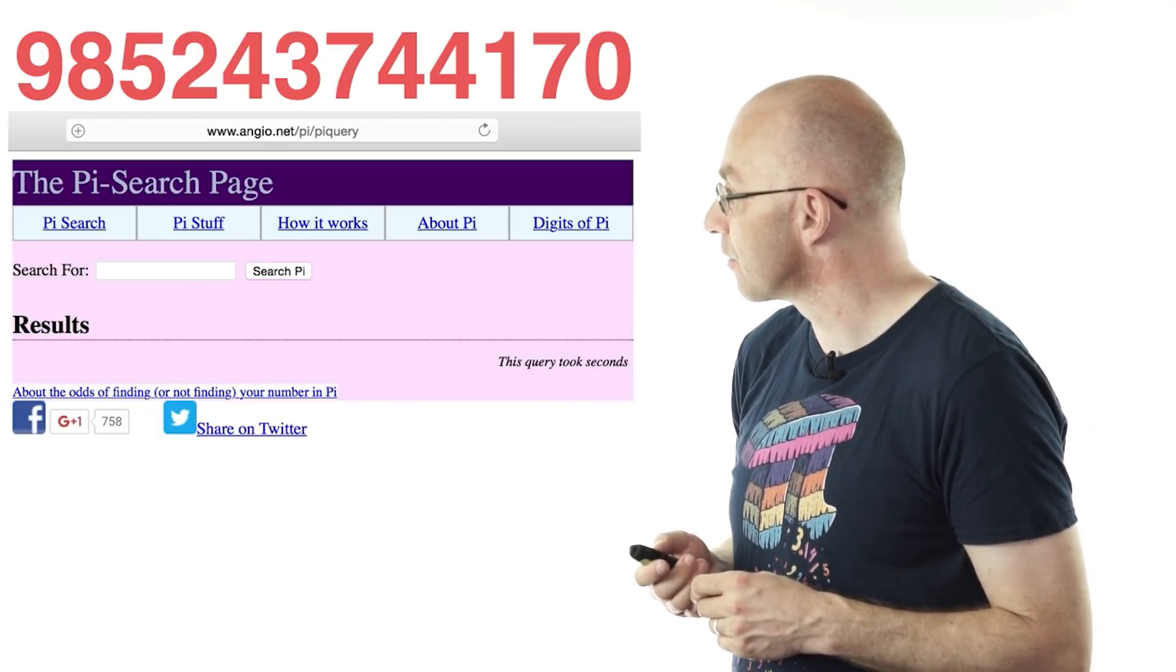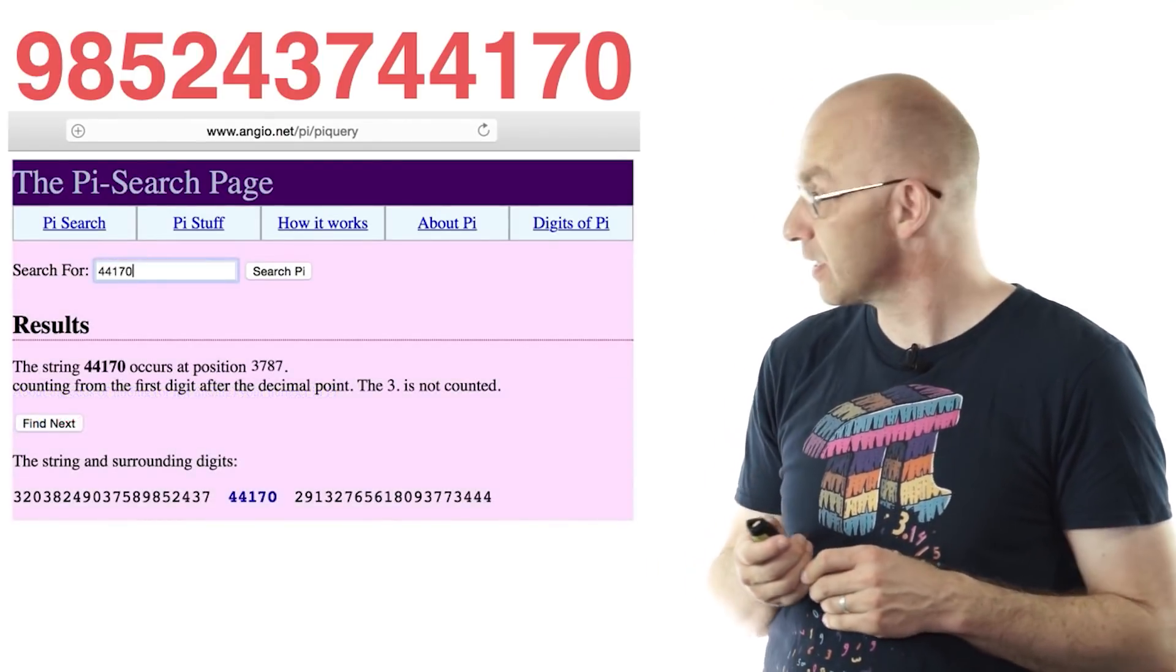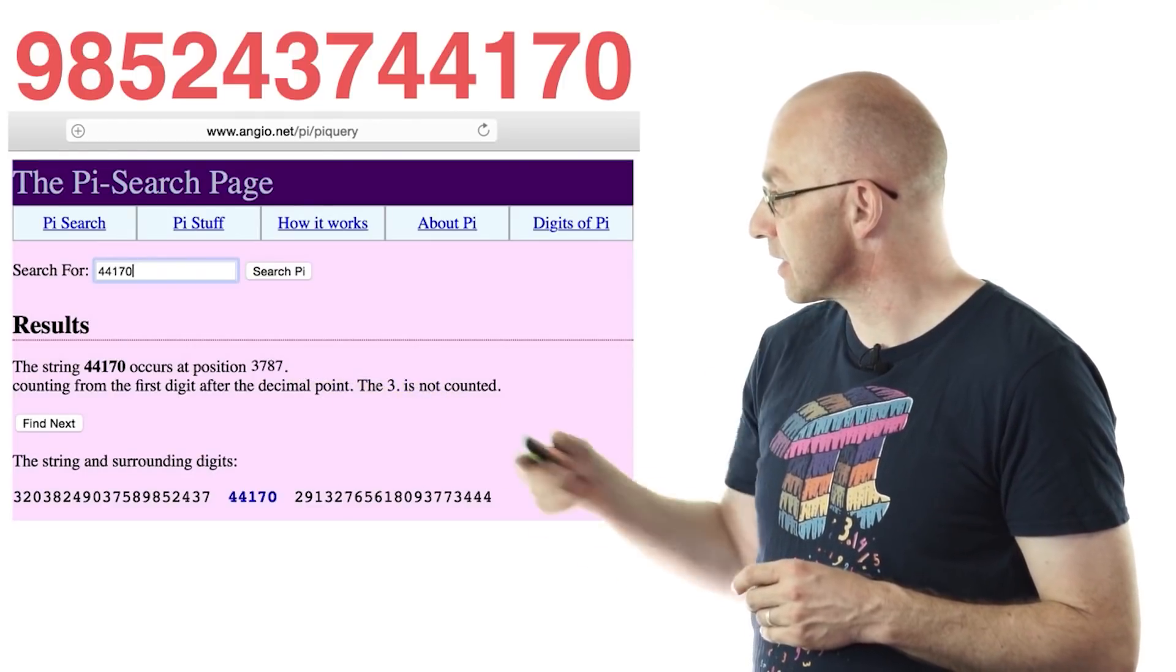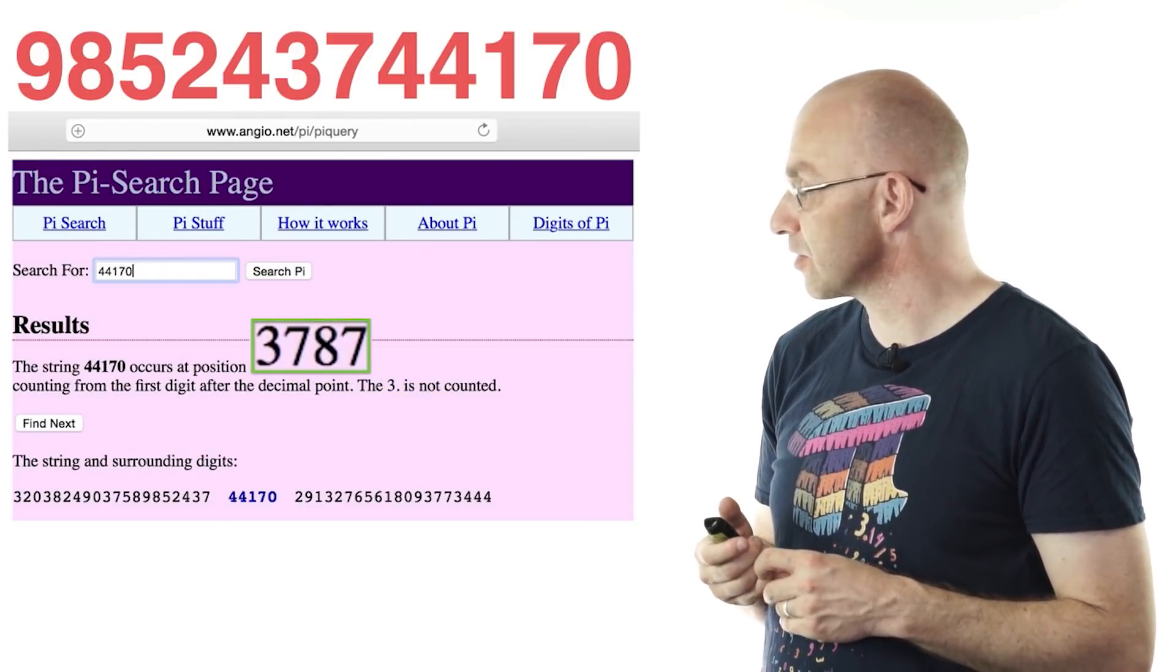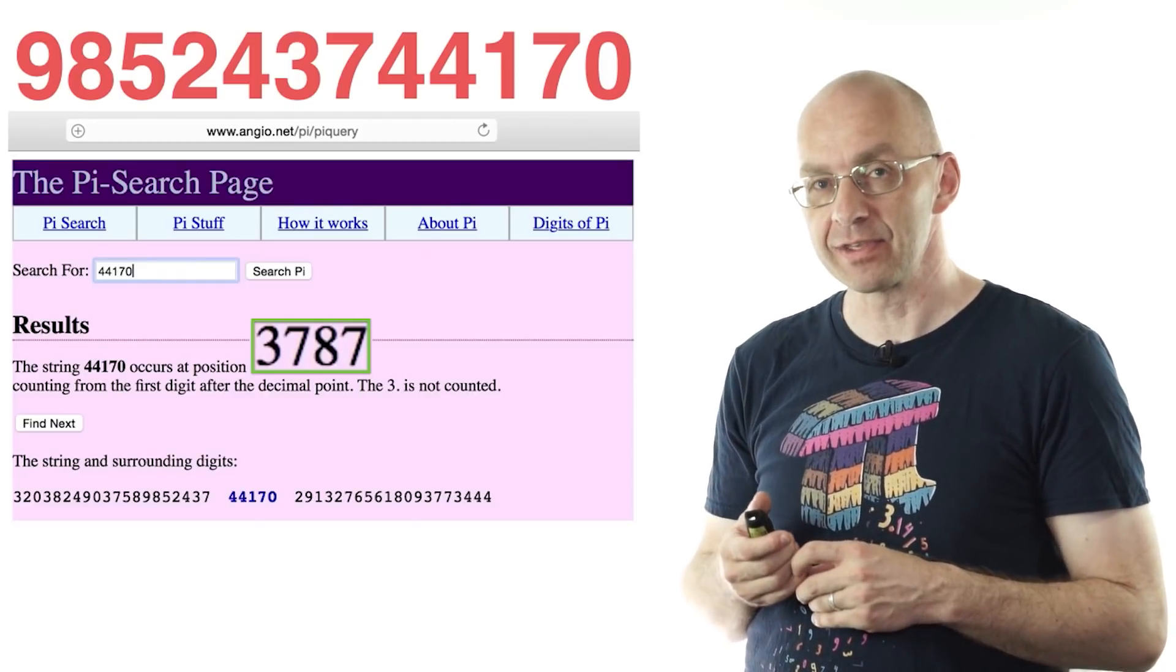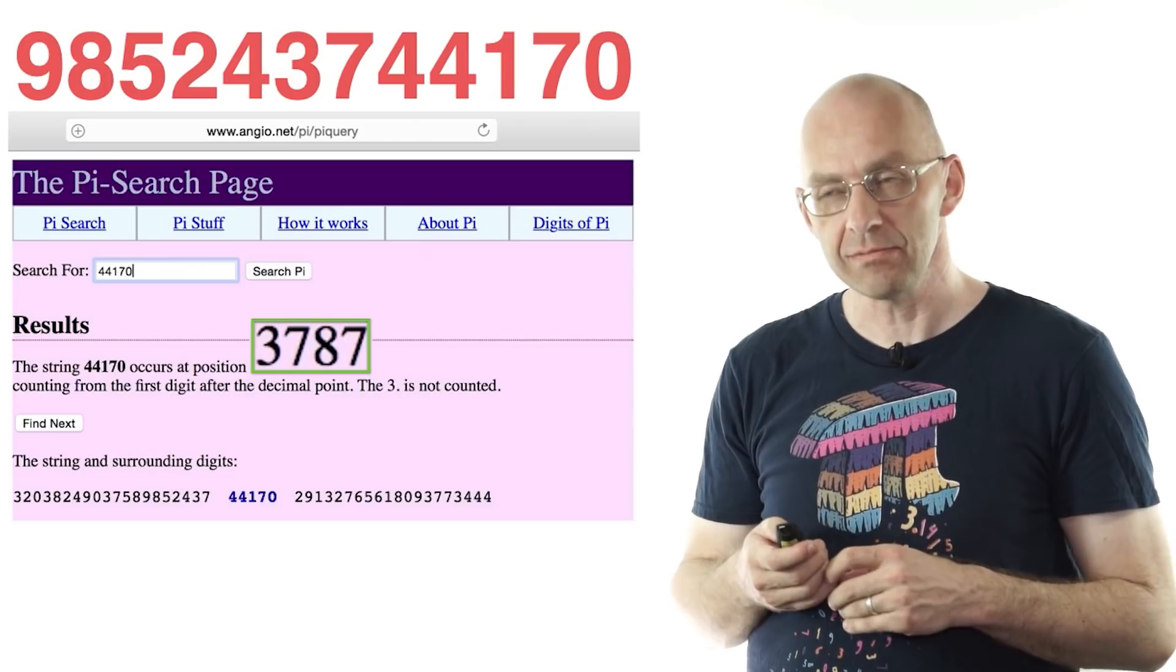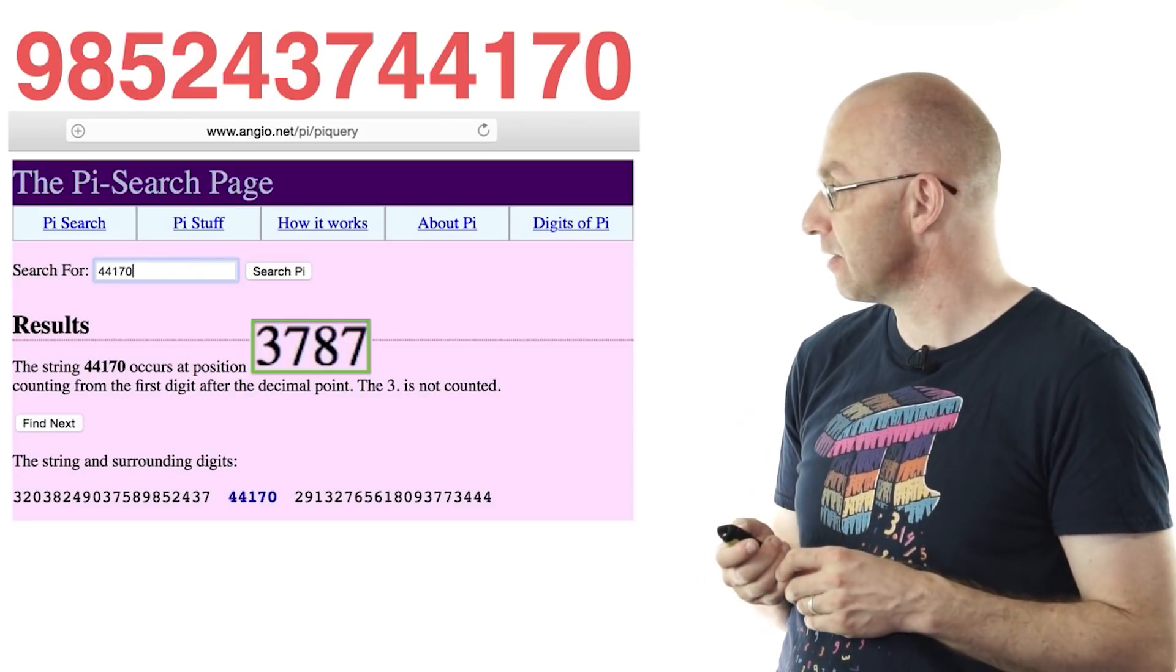You just type in a string of numbers and it tells you the first time it comes up if it knows it. So just type in the last five here—44170—and it tells us that it occurs as the 3,787th digit after the decimal point.